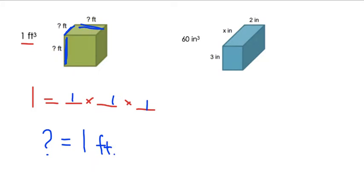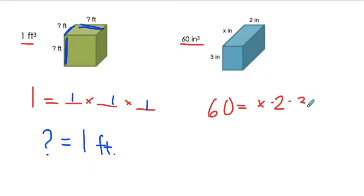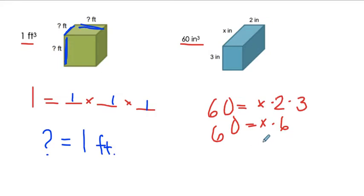On this next problem, our volume is 60 cubic inches. So 60 equals the length — which we don't know, represented by X — multiplied by the width of two inches and the height of three inches. I know 60 equals X times two times three, which is six. So I have to figure out what number multiplied by six gives me 60. Six times ten is 60, so X is going to be 10 inches — because it's only one side, one length in inches, not the whole inside which is cubic inches.